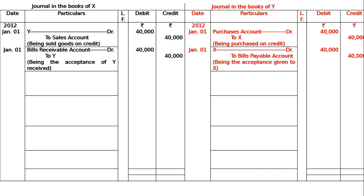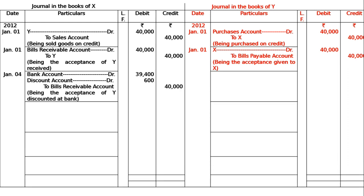Y accepts the bill and returns it to X, who discounts it on 4th January 2012 with his bank at six percent per annum. Three months' discount is taken into consideration. In the books of X, it is bank account debited and discount debited to bills receivable account, rupees 40,000, being the acceptance of Y discounted at the bank. In the books of Y, there is no entry for this transaction.